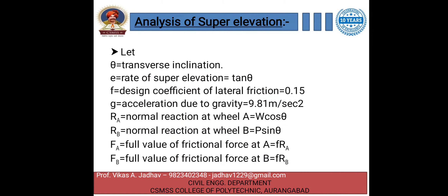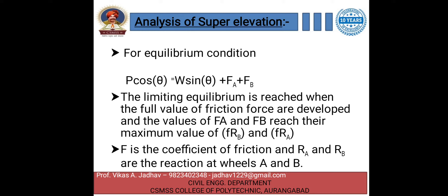In the analysis of super elevation, let θ be the transverse inclination, e the rate of super elevation, f the design coefficient of lateral friction, and g the acceleration due to gravity. Ra and Rb are the reactions at wheels A and B respectively, and FA and FB are the friction forces at A and B. From the equilibrium condition: P cos θ = W sin θ + FA + FB. Limiting equilibrium is reached when full friction forces are developed, with FA = f·Rb and FB = f·Ra.